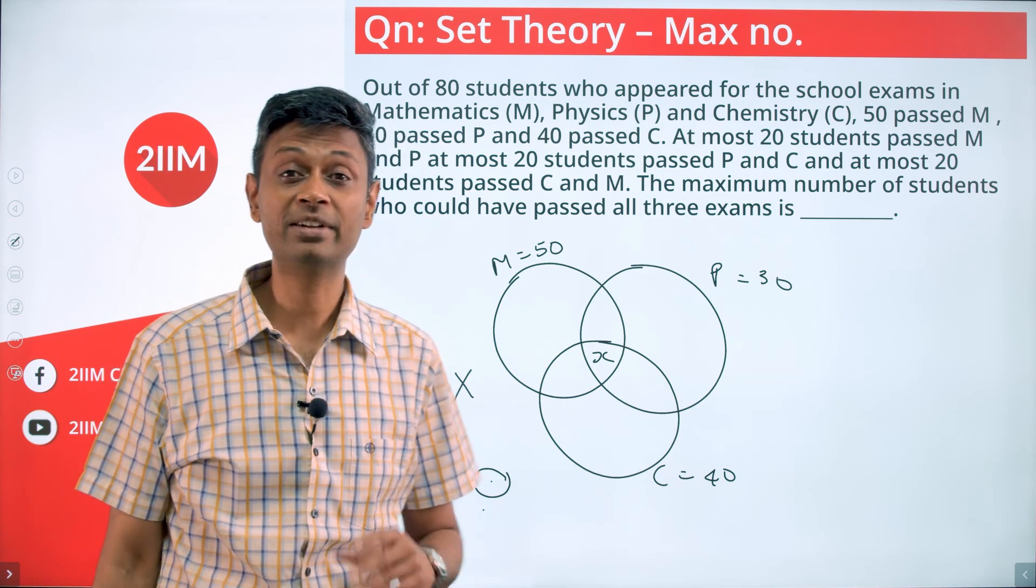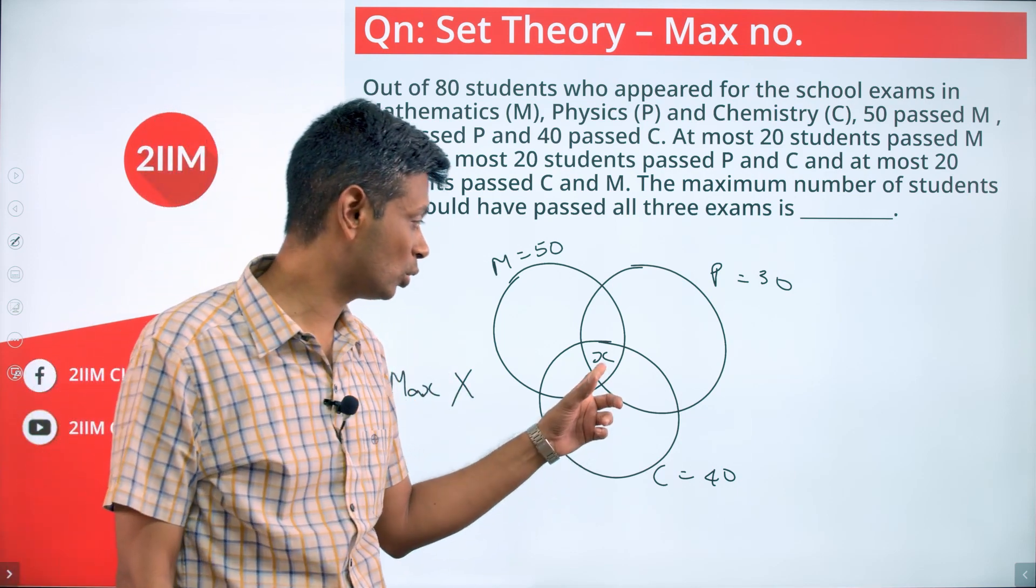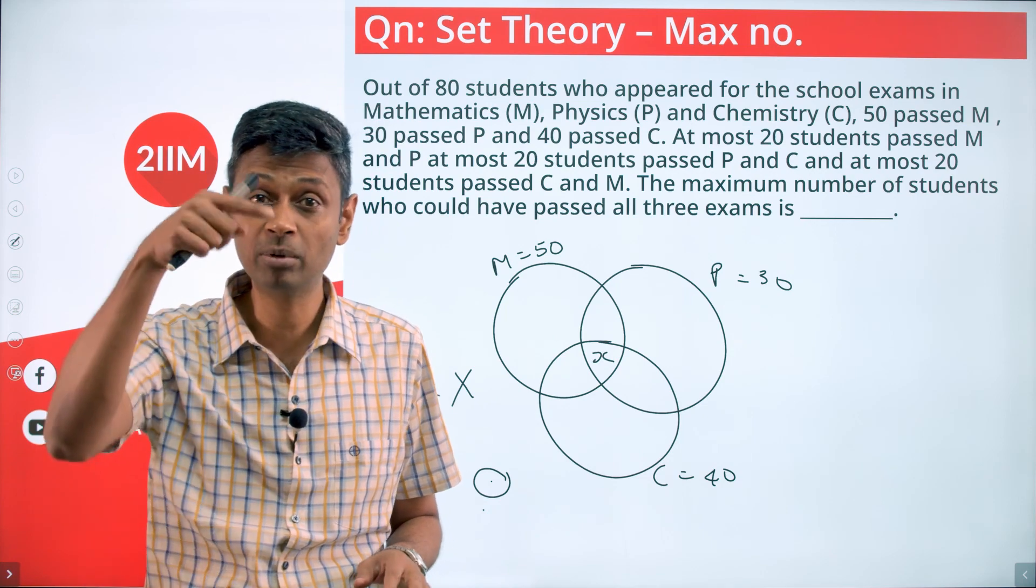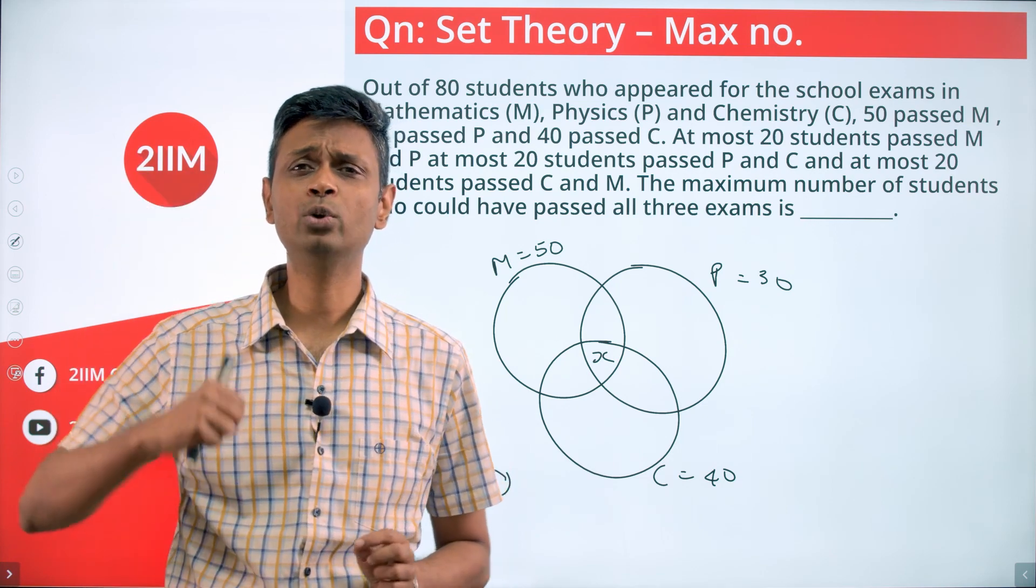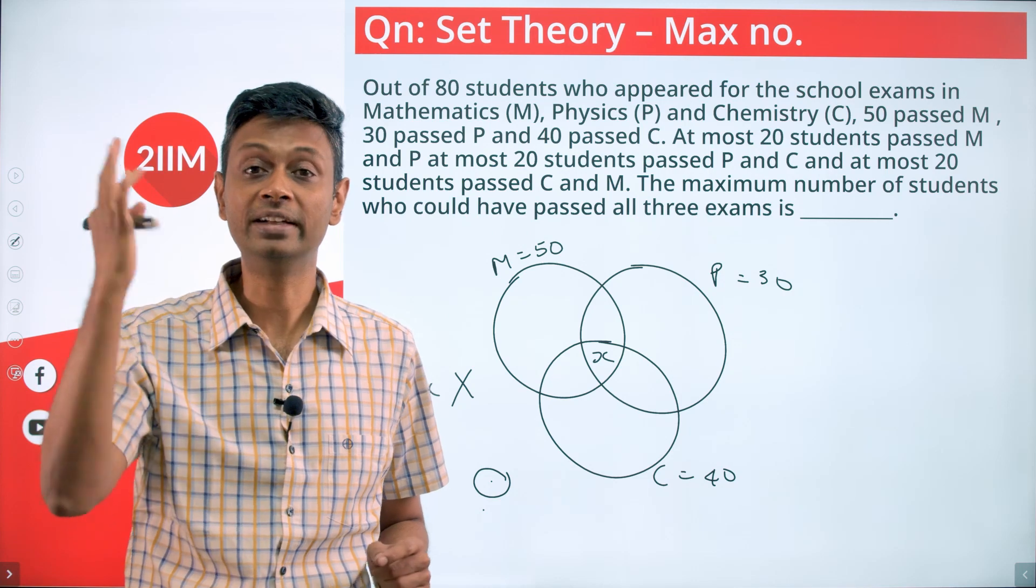If the total were not 80 but 78 or 75, it's quite clear that this number could go down. We want to find the maximum possible x, so I'm going to assume A union B union C is the maximum possible, which is 80.